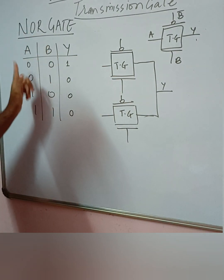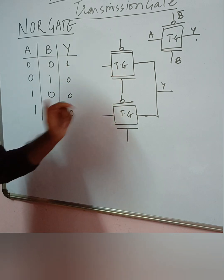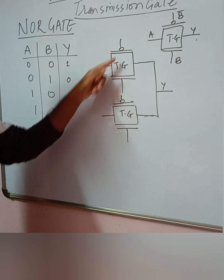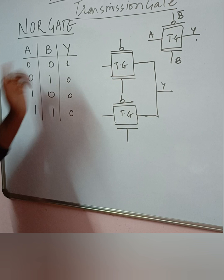So basically we have two inputs. That's the reason we are having two transmission gates used in the circuit. So basically, the number of transmission gates to be used depends upon the number of inputs.